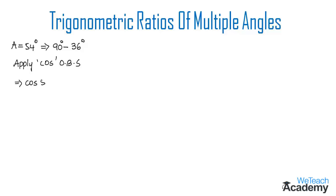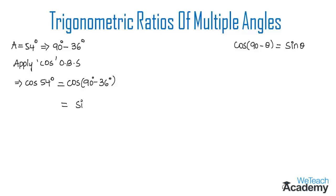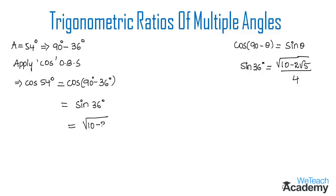By applying cosine, we get cos 54 degrees is equal to cos(90 degrees minus 36 degrees). This is in the form of cos(90 degrees minus theta) which equals sine theta. So we get cos(90 degrees minus 36 degrees) as sine 36 degrees, and the value of sine 36 degrees is equal to under root of (10 minus 2 root 5) divided by 4.